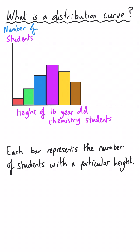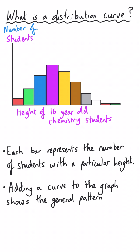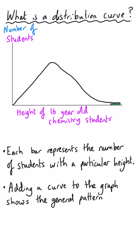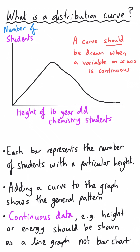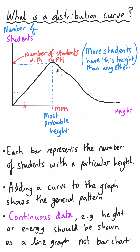And then we keep going — fewer people are taller, and then fewer still, and then we've got some really, really tall people in this group. A distribution curve takes this bar chart and connects them together in one continuous line up through each bar and down the other side. Once we take away the bars, we still have the same shape. A distribution curve shows the general pattern in heights, with the most probable height of a student being somewhere about here.